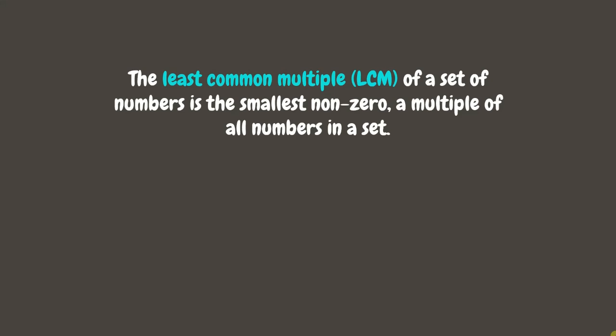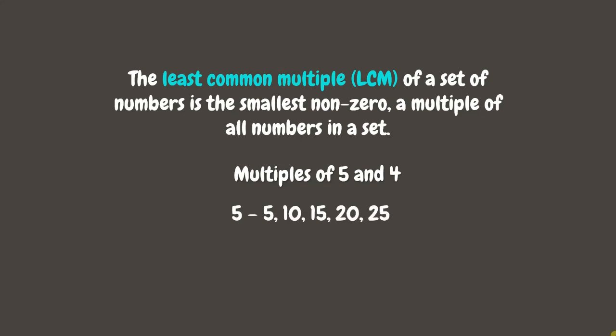For our example, the numbers are 5 and 4. The multiples of 5 are 5, 10, 15, 20, 25, and so on. While the multiples of 4 are 4, 8, 12, 16, 20, and so on. Here, we can see that the Least Common Multiple is 20.